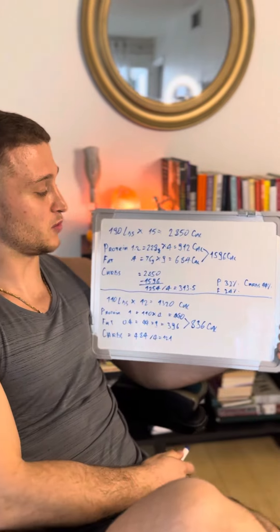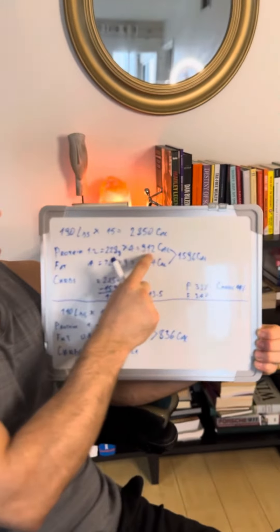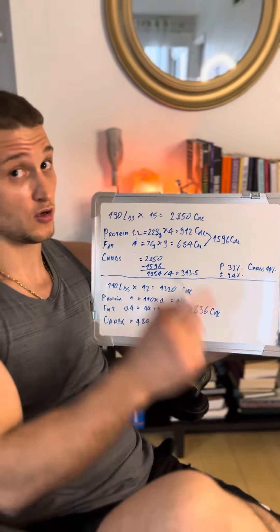And because 1 gram of protein is equal to 4 calories, I'm going to multiply that with 4, and I'm going to get this number right here. So, I got 912 calories coming from protein because I want to be a big dog.